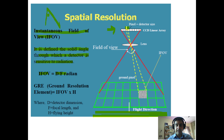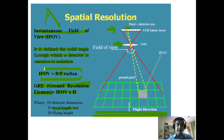IFOV depends on d, the detector dimension, and f, the focal length of the lens. The ground resolution element is derived from the formula: IFOV = d/f, and the ground resolution element equals IFOV multiplied by the flying height. So both detector size, focal length, and altitude together determine the spatial resolution.